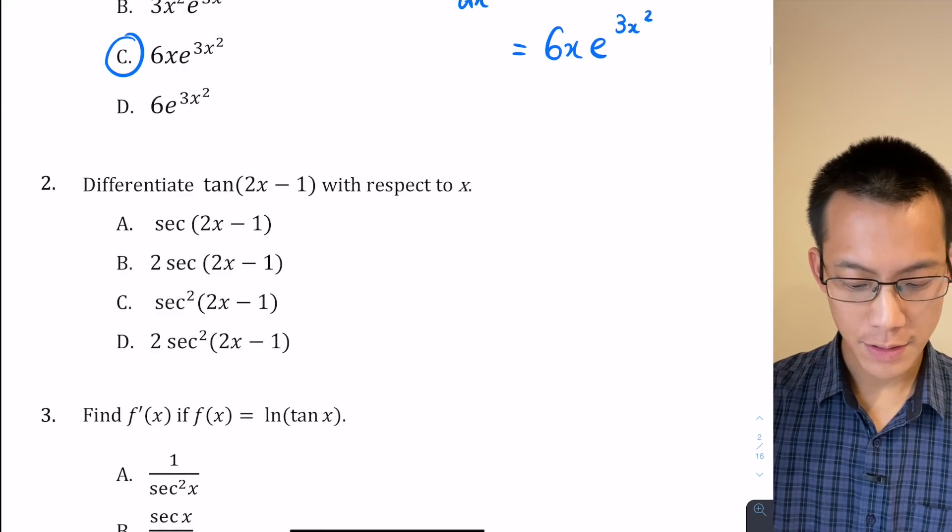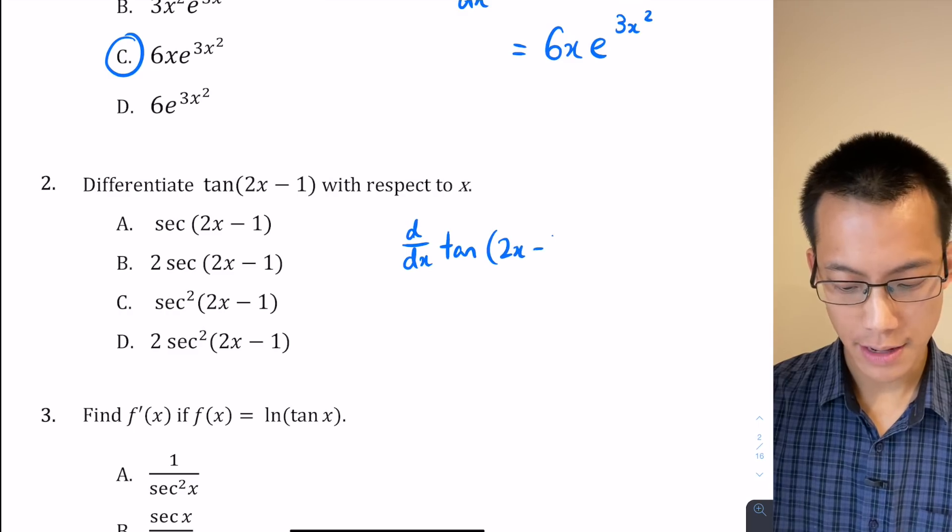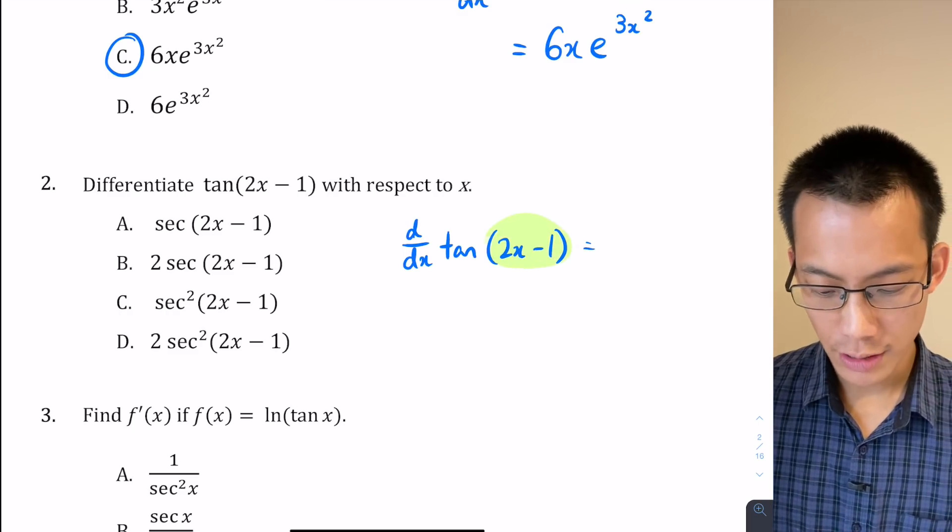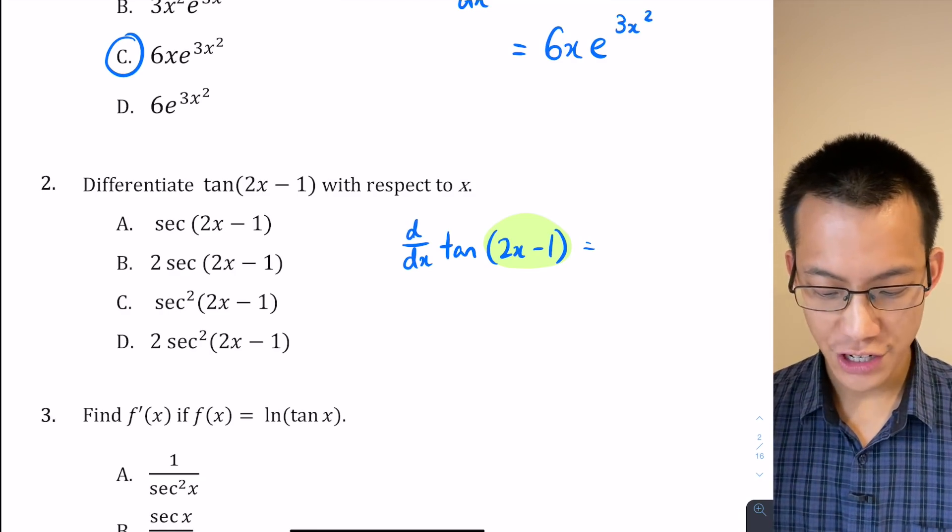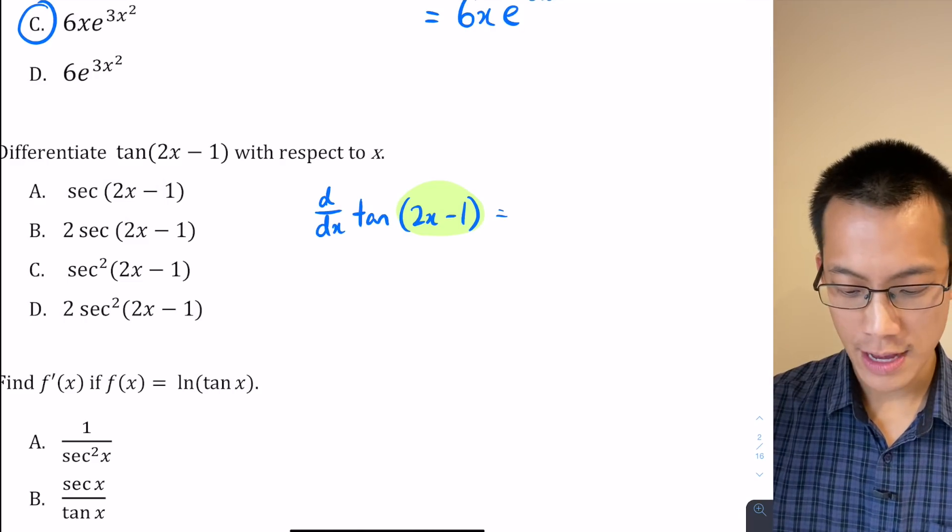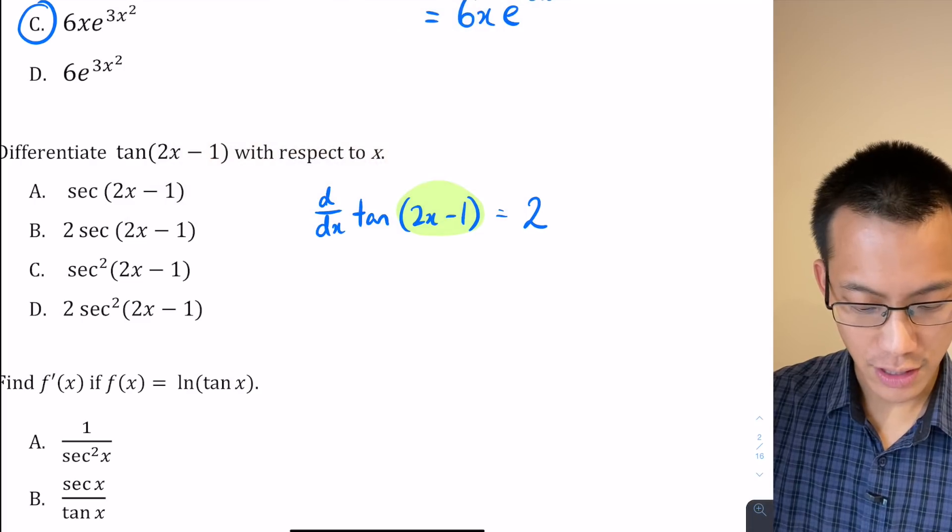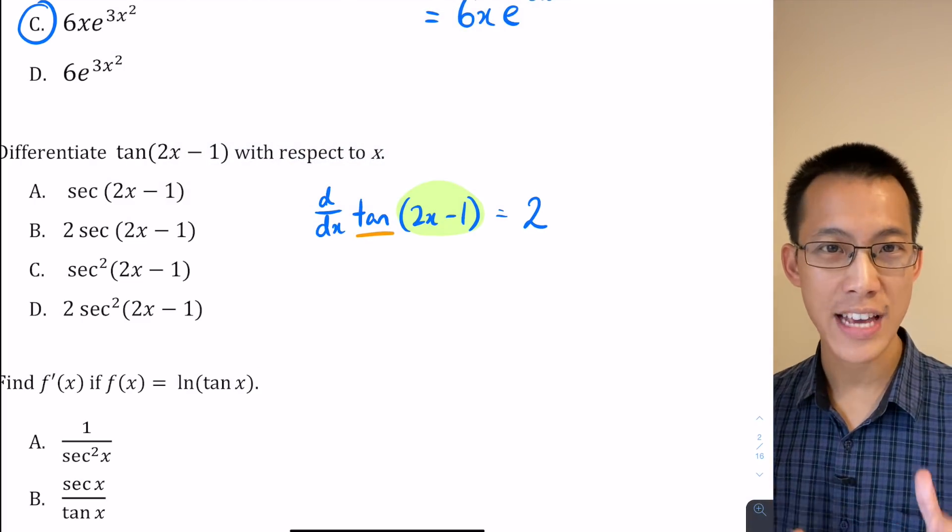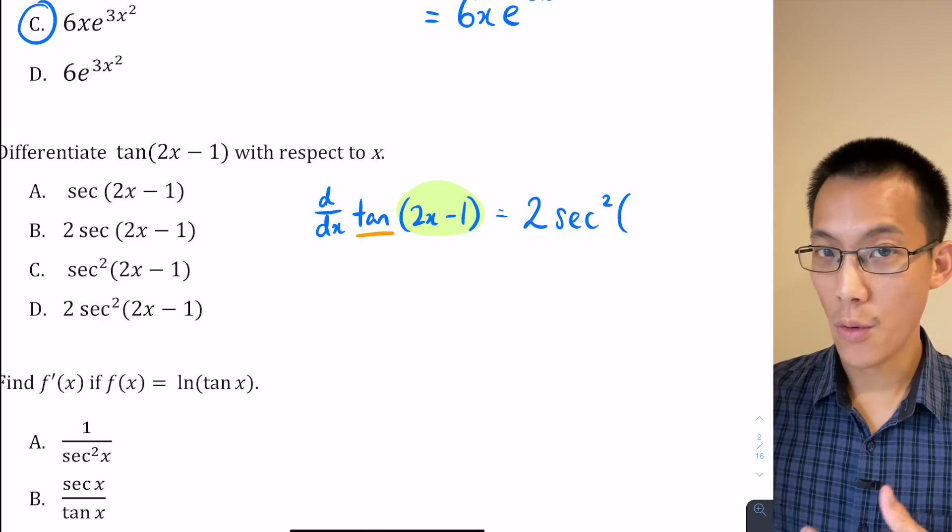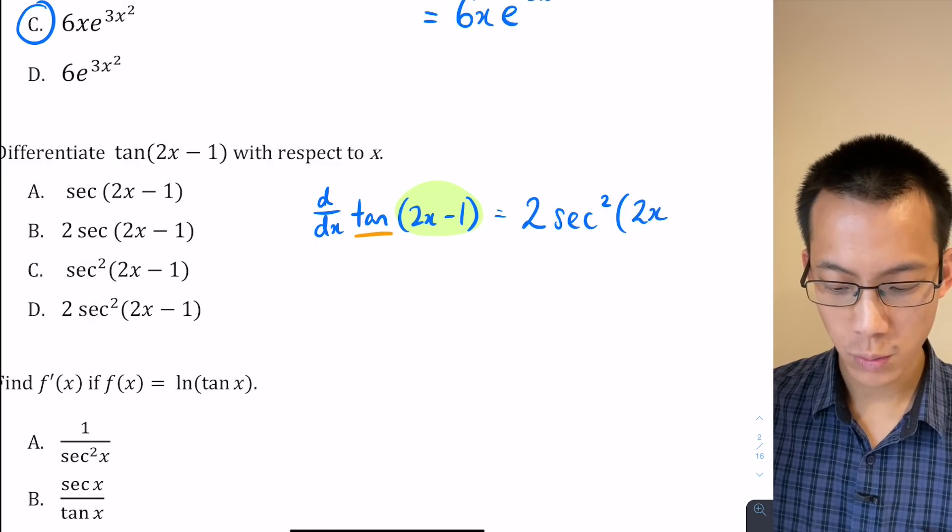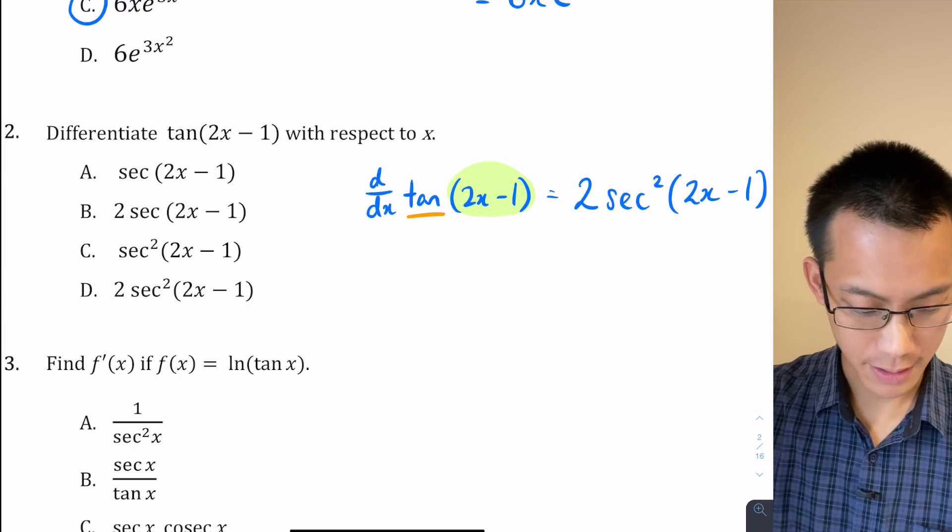The inside function here, if I'm differentiating tan(2x - 1), here's my inside function 2x - 1. When you differentiate the 2x you just get the 2. When you differentiate that negative 1 you get 0. So here's my inside derivative, 2. Then I deal with the outside function, which in this case is tan. The derivative of tan is sec squared. So I've got sec squared, and then what remains is what the original inside function was: 2x - 1, that remains unchanged. So if you have a look, that lines up with answer D.